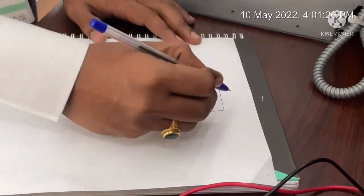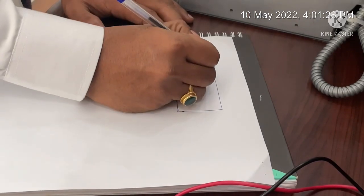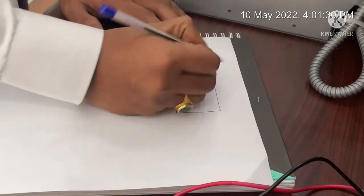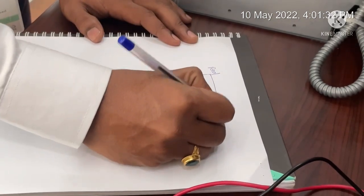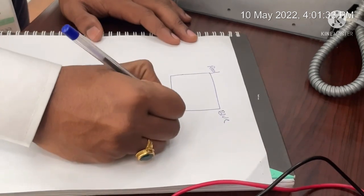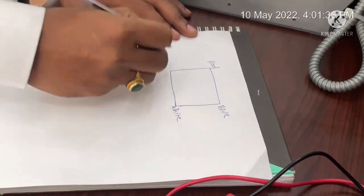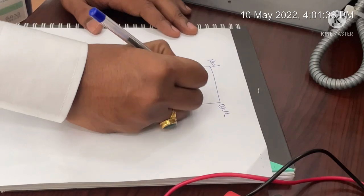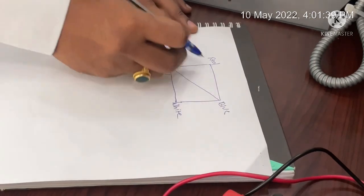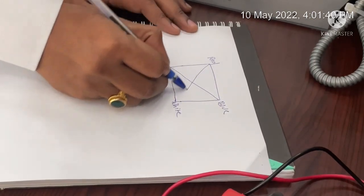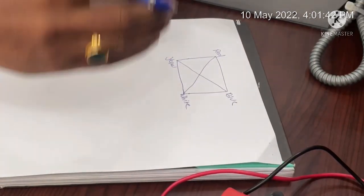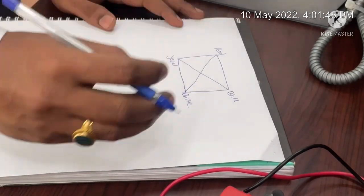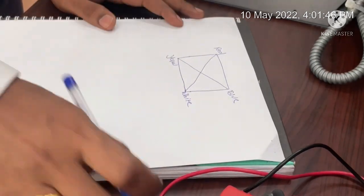Now I am going to draw a square and write all the cable color codes — red, blue, white, and yellow. I will connect this corner. Now I have to measure the resistance by using the multimeter.